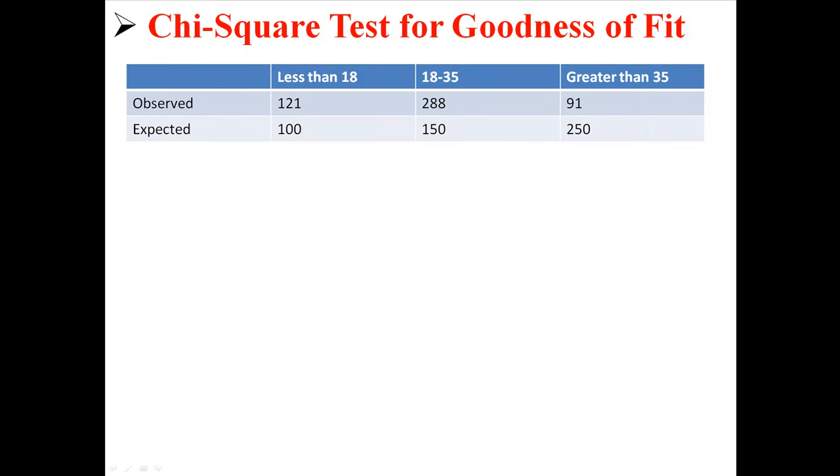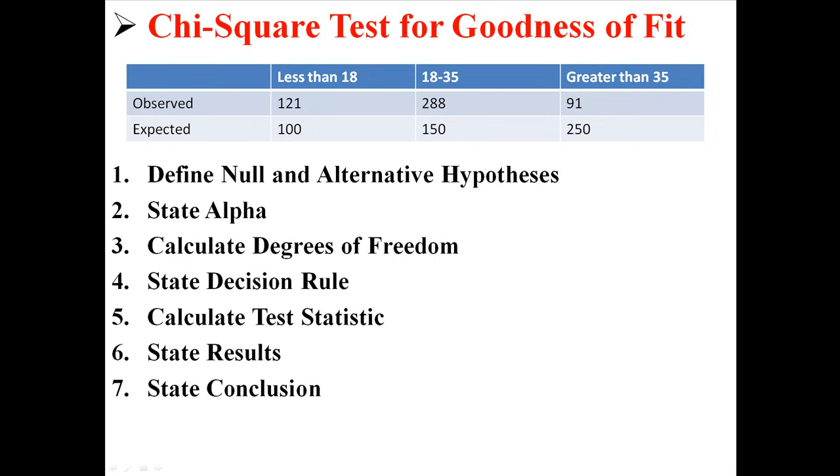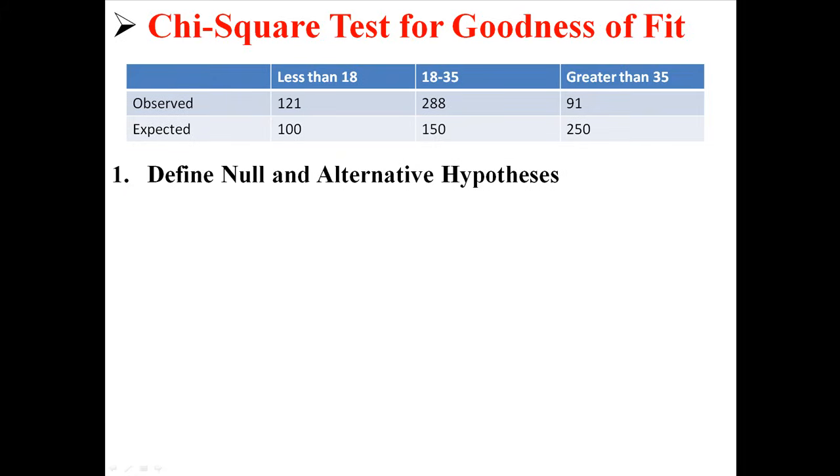So, now we have what actually occurred in our sample of 500, and what we would have expected to have occurred in our sample of 500. And now we can do our hypothesis test for a chi-square test for goodness of fit. Starting with defining the null and alternative hypotheses. Our null is that our data meet the expected distribution, and the alternative is that the data do not meet the expected distribution.